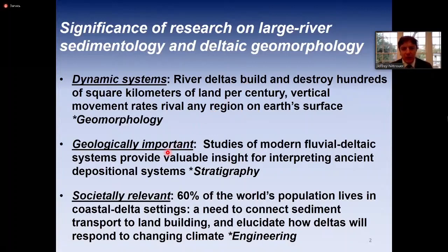River deltas are also geologically important. Studies of modern fluvial deltaic systems provide insights for interpreting ancient depositional systems through their stratigraphy. Through the stratigraphic lens, we can ask questions about how Earth's climate and its surface systems — rivers and deltas — responded to large climate excursions or perturbations in Earth's history, using insights from modern systems to better inform our stratigraphic interpretations of ancient delta systems.